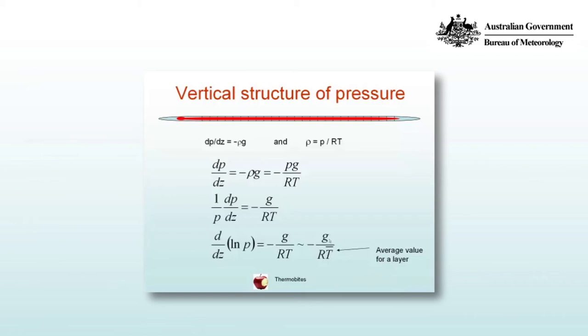Now dp over p equals d log p, the natural logarithm of p. If you need to, go and stop the video and revise natural logarithms and natural exponents. So the term on the left hand side now may be written as d/dz of log p. We can integrate that with respect to z.